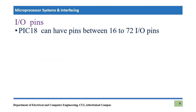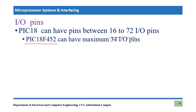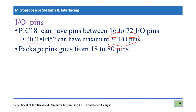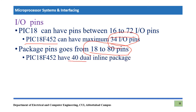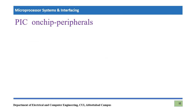IO pins are an important feature of any microcontroller. PIC18 family has around 16 to 72 pins usable as input/output pins out of the total 18 to 80 package pins. The microcontroller we are going to use — PIC18F452 — comes in a 40-pin Dual In-Line Package and provides 34 pins for input or output purposes.